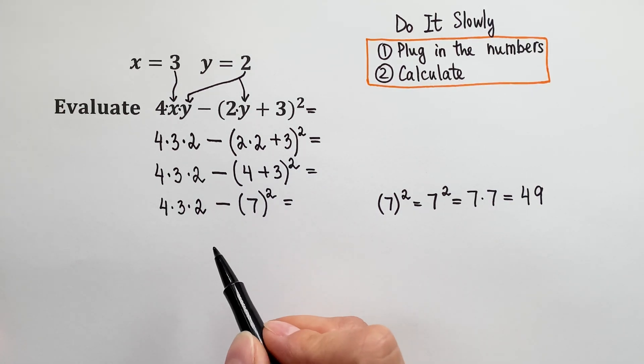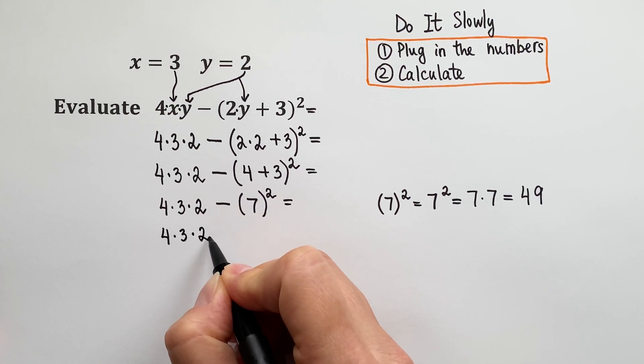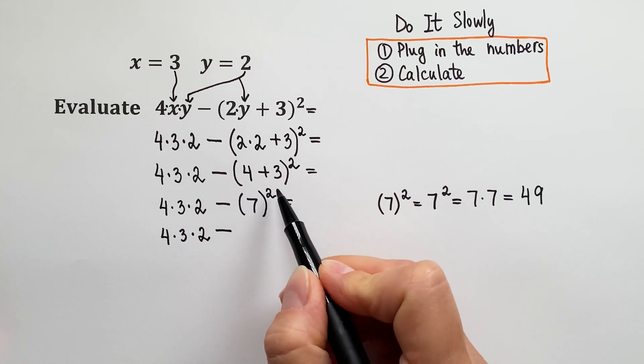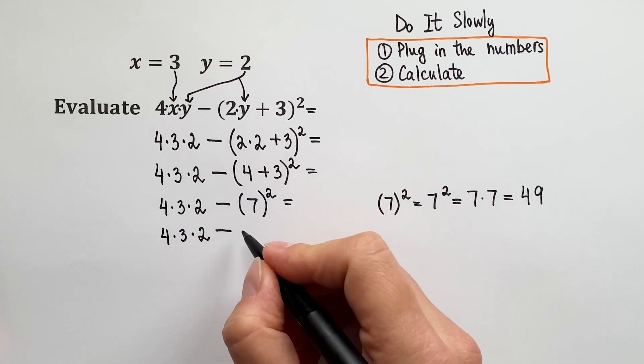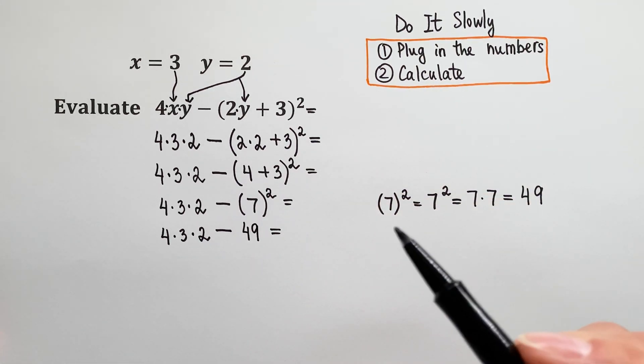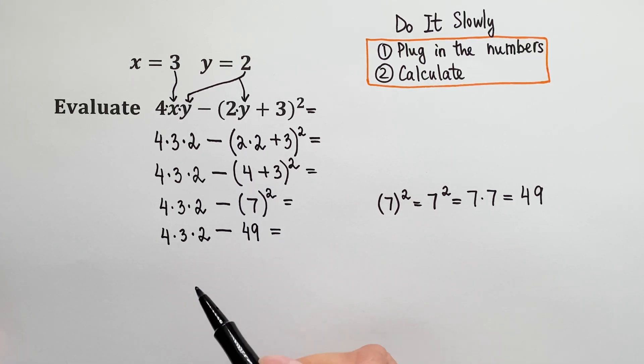Let's rewrite and see what our next step is. So 4 times 3 times 2 minus came from our expression, and this whole thing became 49. So put 49 here. It's much nicer now. No more parenthesis, no more power. What do we do next?